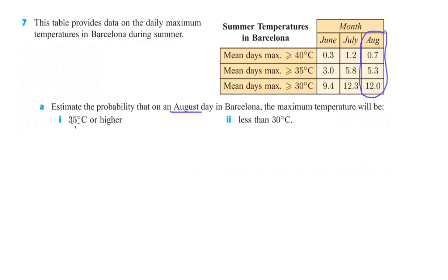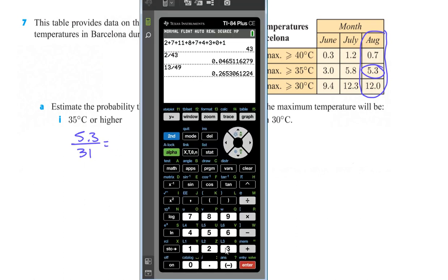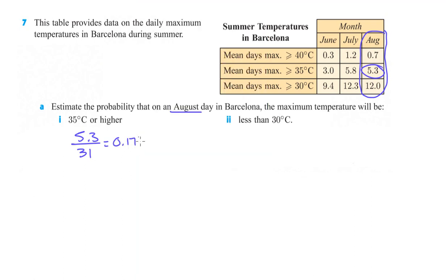So what's the probability it's going to be 35 degrees or higher? So here's our 35 degrees or higher. We will have 5.3 of those days will be above 35 degrees or higher, so 5.3 out of the 31 total days in August, right? So we can calculate that out. 5.3 divided by 31 and we get 0.171, or 17.1% is the probability.